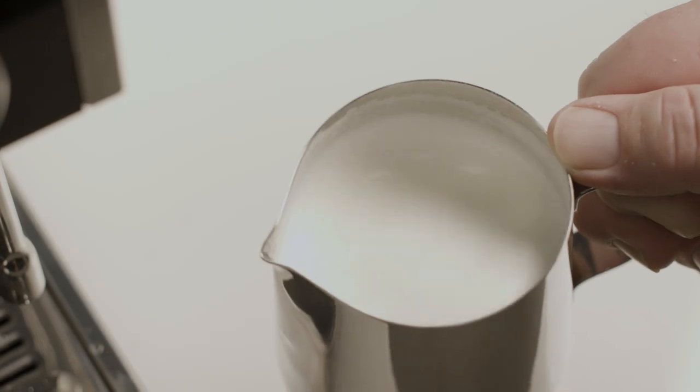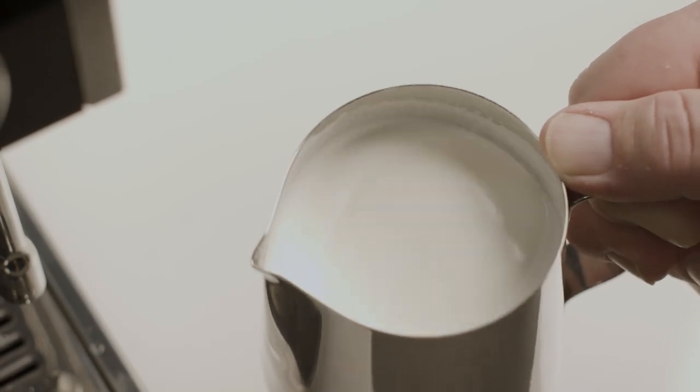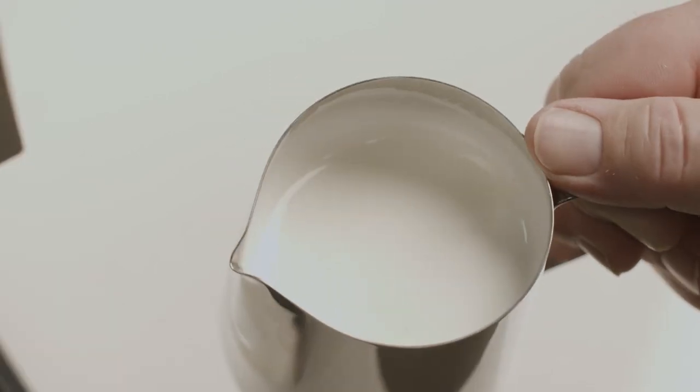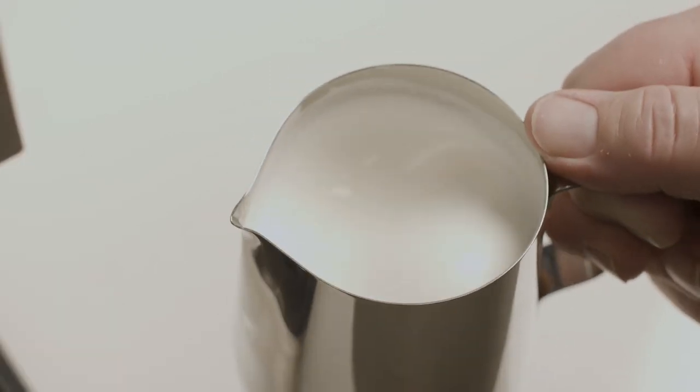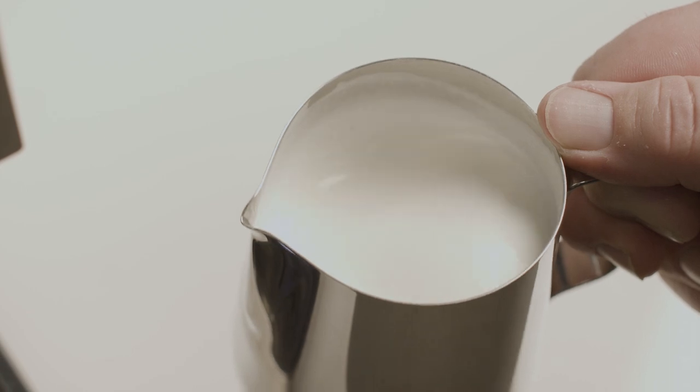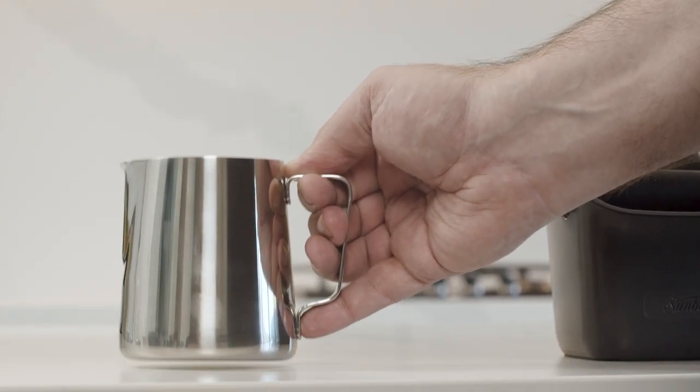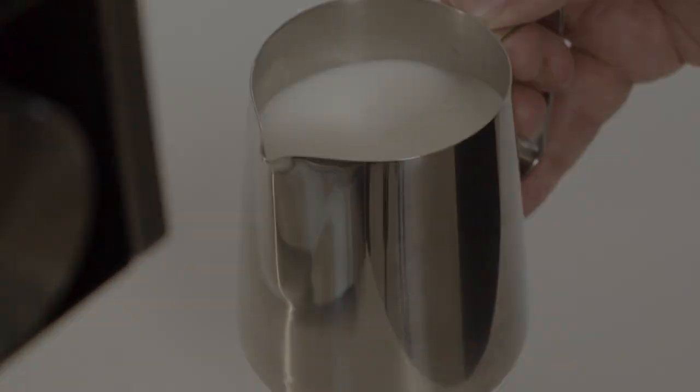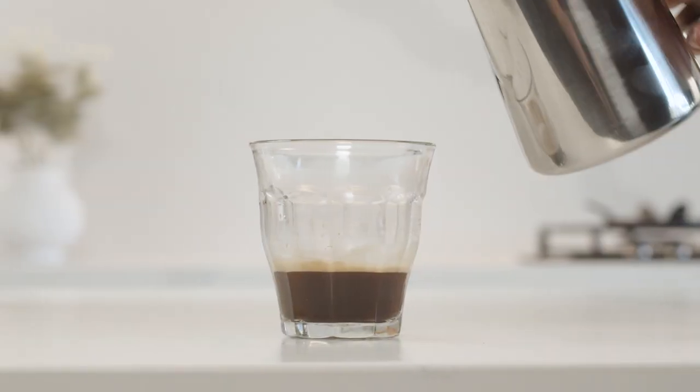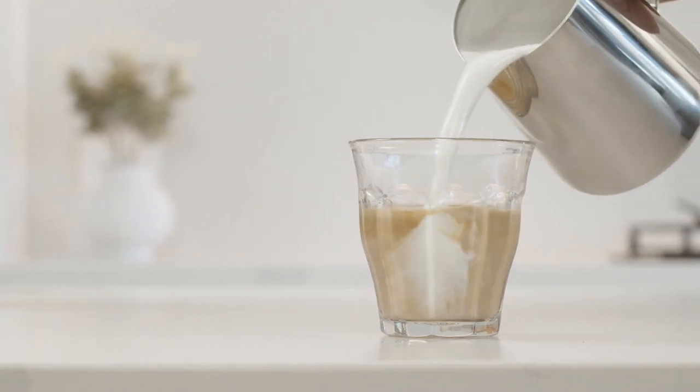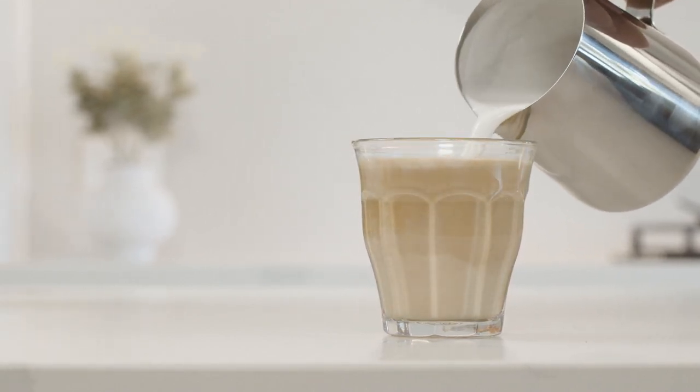Swirl the jug to blend the milk and create a silky texture. Cafe quality milk should look like glossy white paint with a smooth and velvety mouthfeel. You can tap the jug to release larger air bubbles. Pour your milk in one steady stream and now you've just made your first cafe style coffee at home.